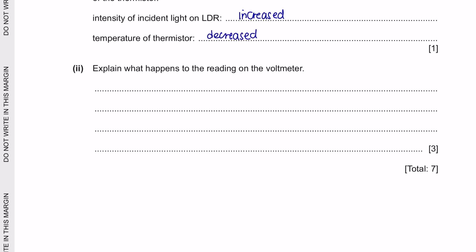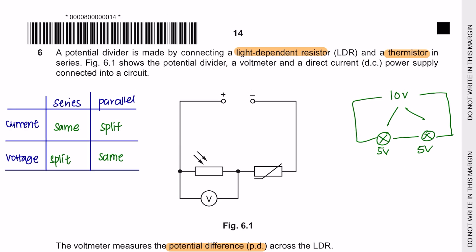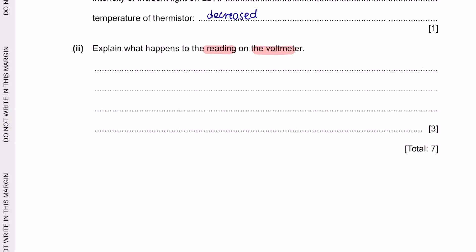Next question part 2: Explain what happens to the reading on the voltmeter. The resistance of the LDR decreases and the resistance of the thermistor increases. According to the formula of the potential divider, if the resistance has decreased, then it will have a smaller proportion of the total resistance, which then will be a smaller proportion of the EMF.